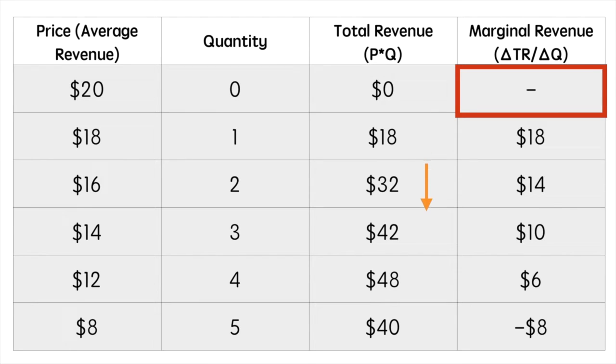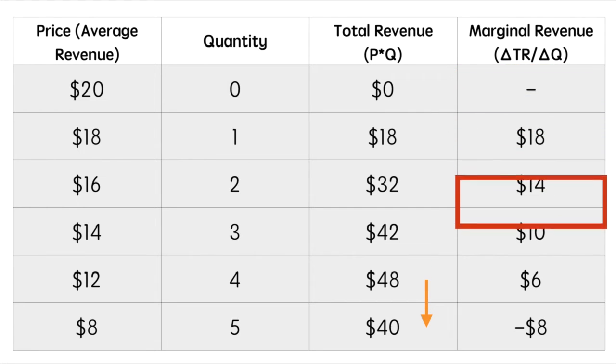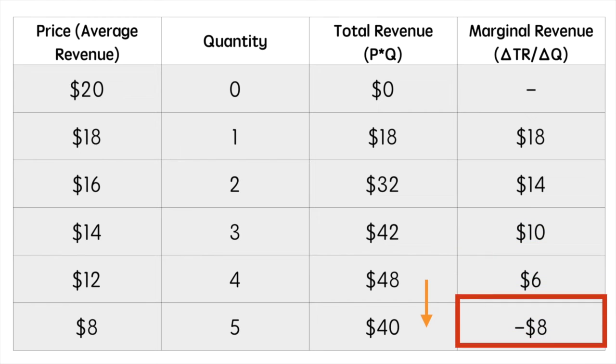As we sell progressively more, our marginal revenue continues to fall and at quantity 5 becomes negative. Our firm maximizes their revenue by selling at a price of $12 and should not lower their price any further.